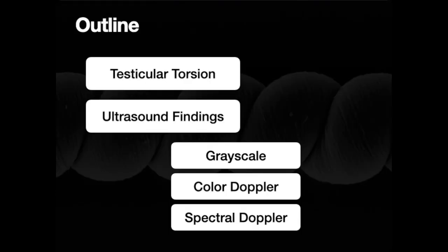As in any good talk, I'll tell you what we're going to talk about, talk about it, and then tell you what we talked about. We're going to discuss testicular torsion itself — I don't want to supplant urologist-level expertise — but then we'll spend most of our time on the ultrasound findings: the grayscale findings, the color Doppler findings, and the spectral Doppler findings. Hopefully that gives us more tools to demystify and untie the knots in our brain as we look for testicular torsions.